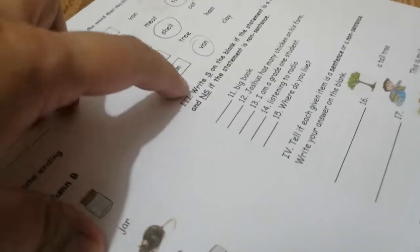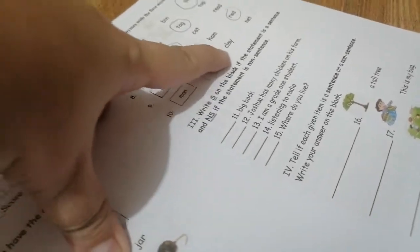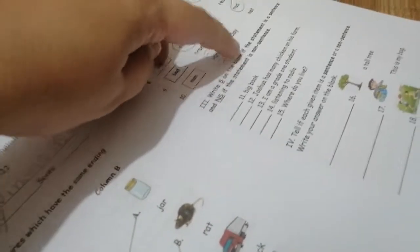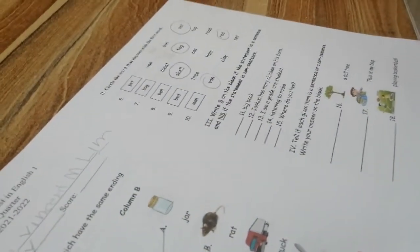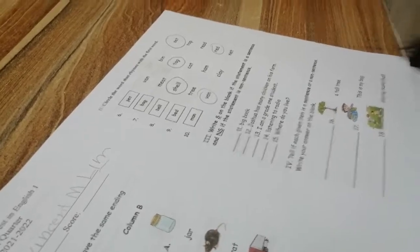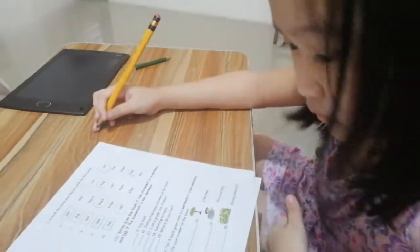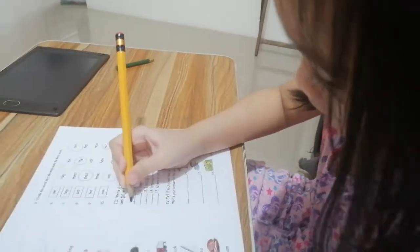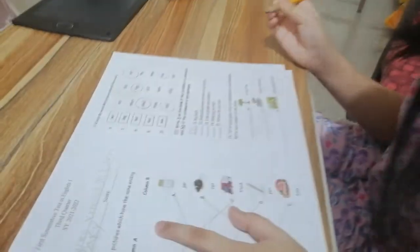Next is write S on the blank if the statement is a sentence and NS if the statement is non-sentence. Katulad ng ginawa natin kanina. Big book. Oh. Is that a S or NS? NS. Okay. You write NS.